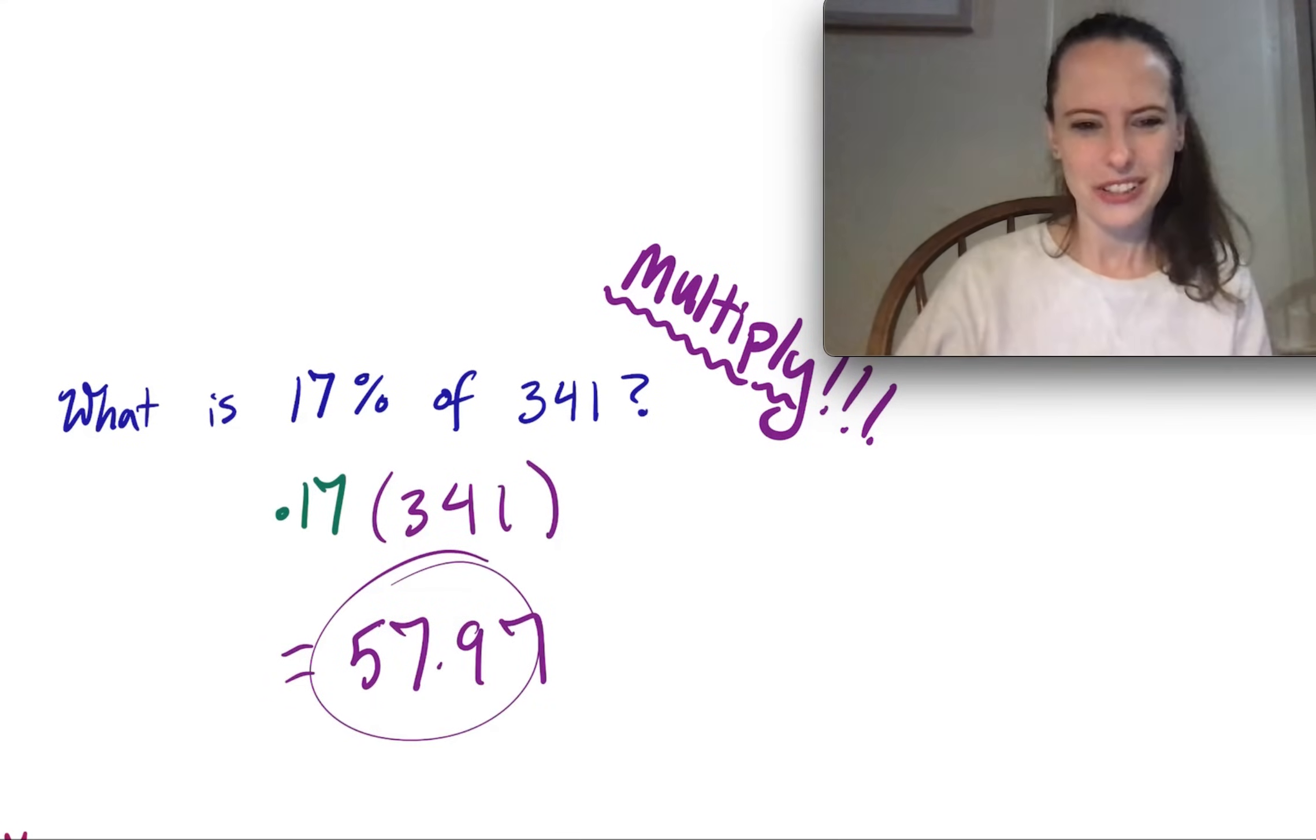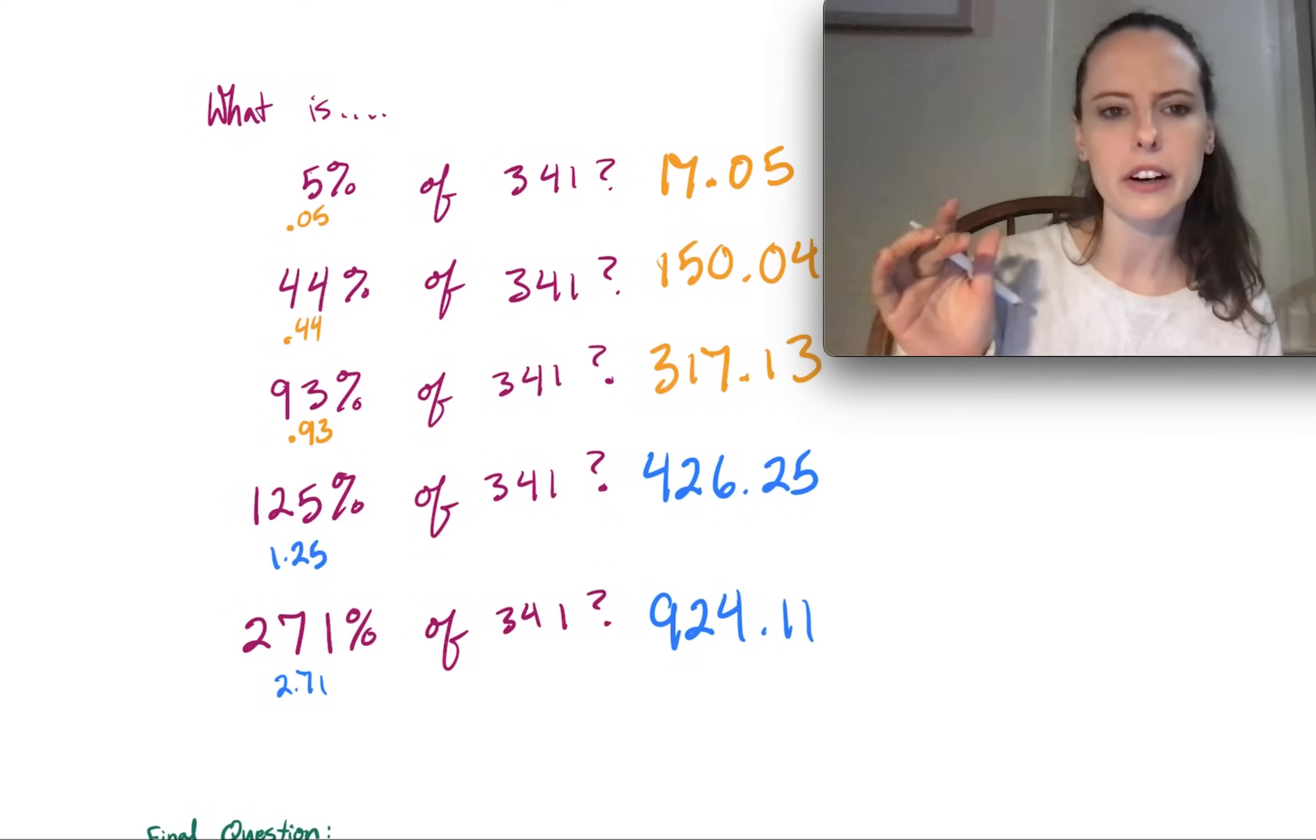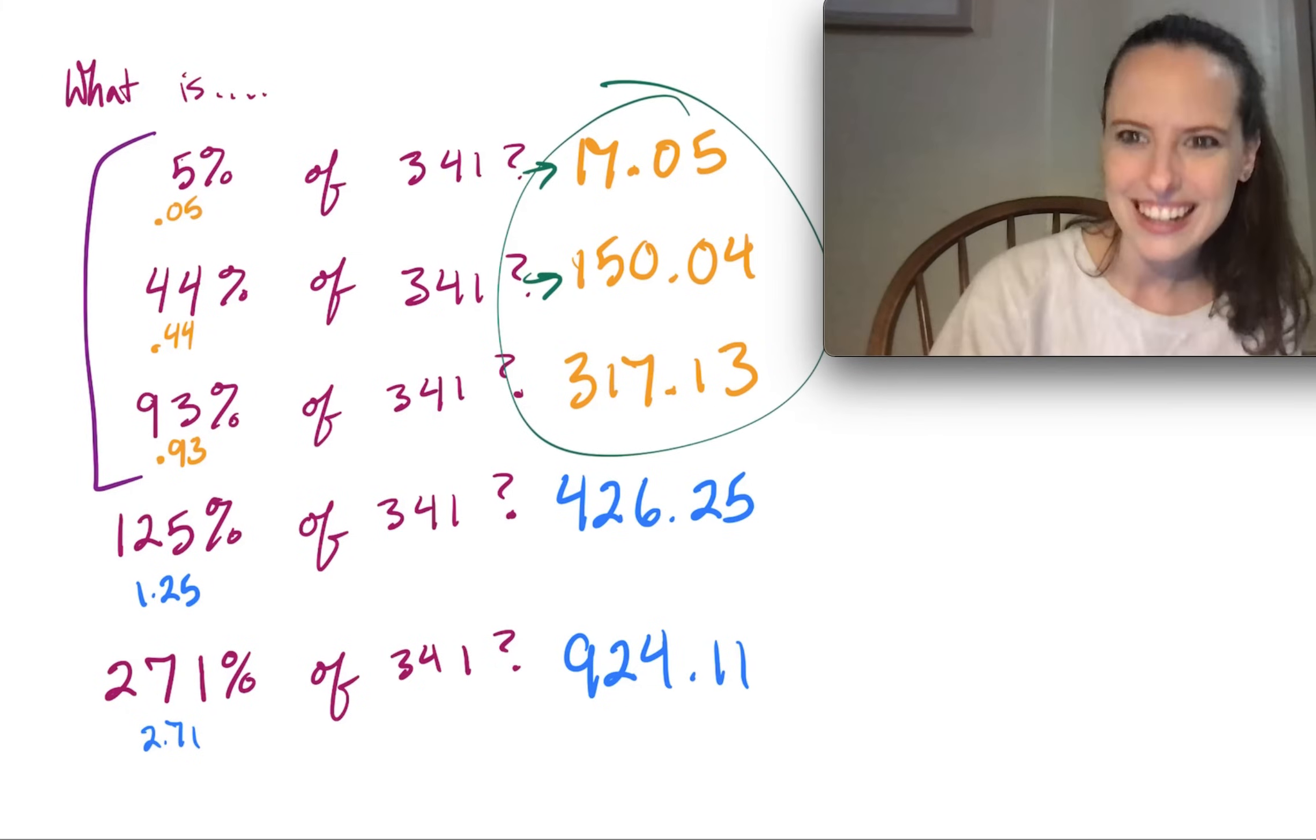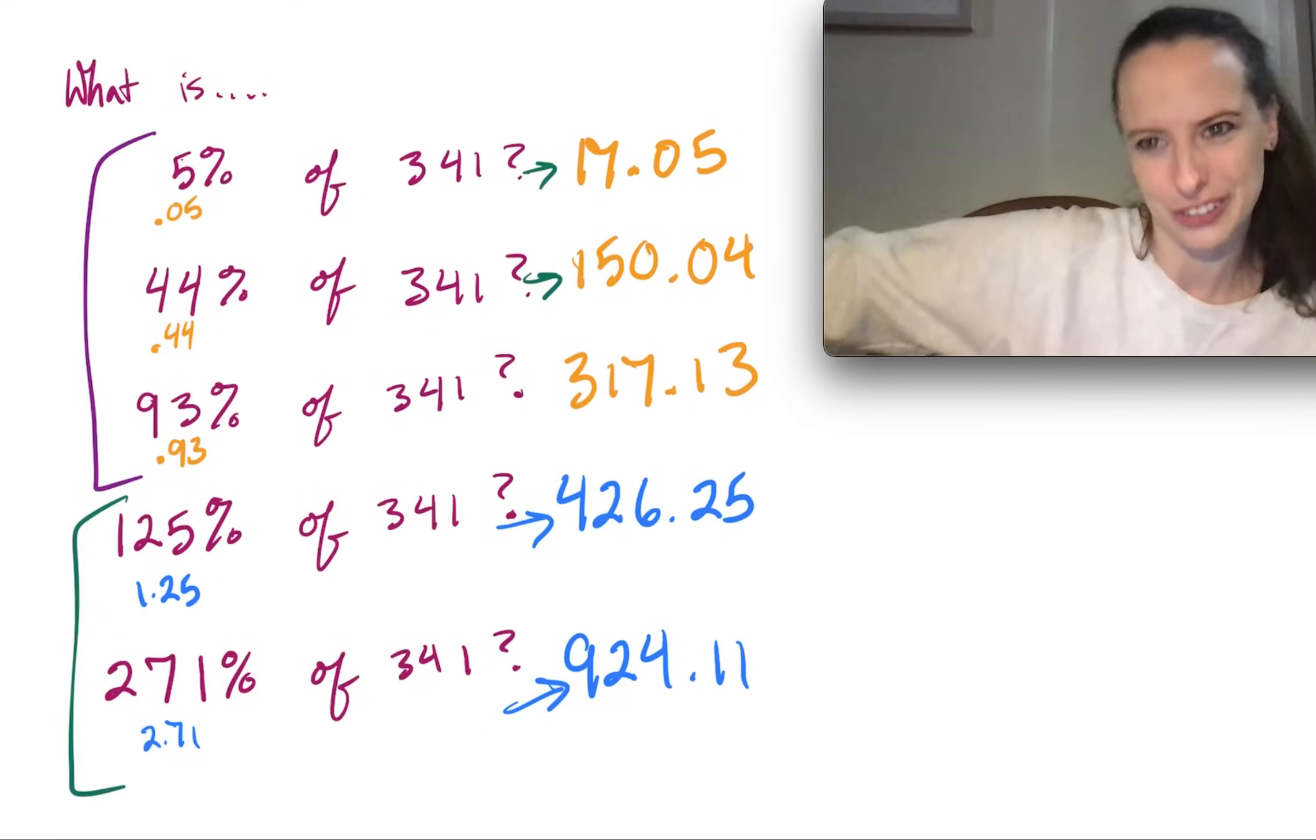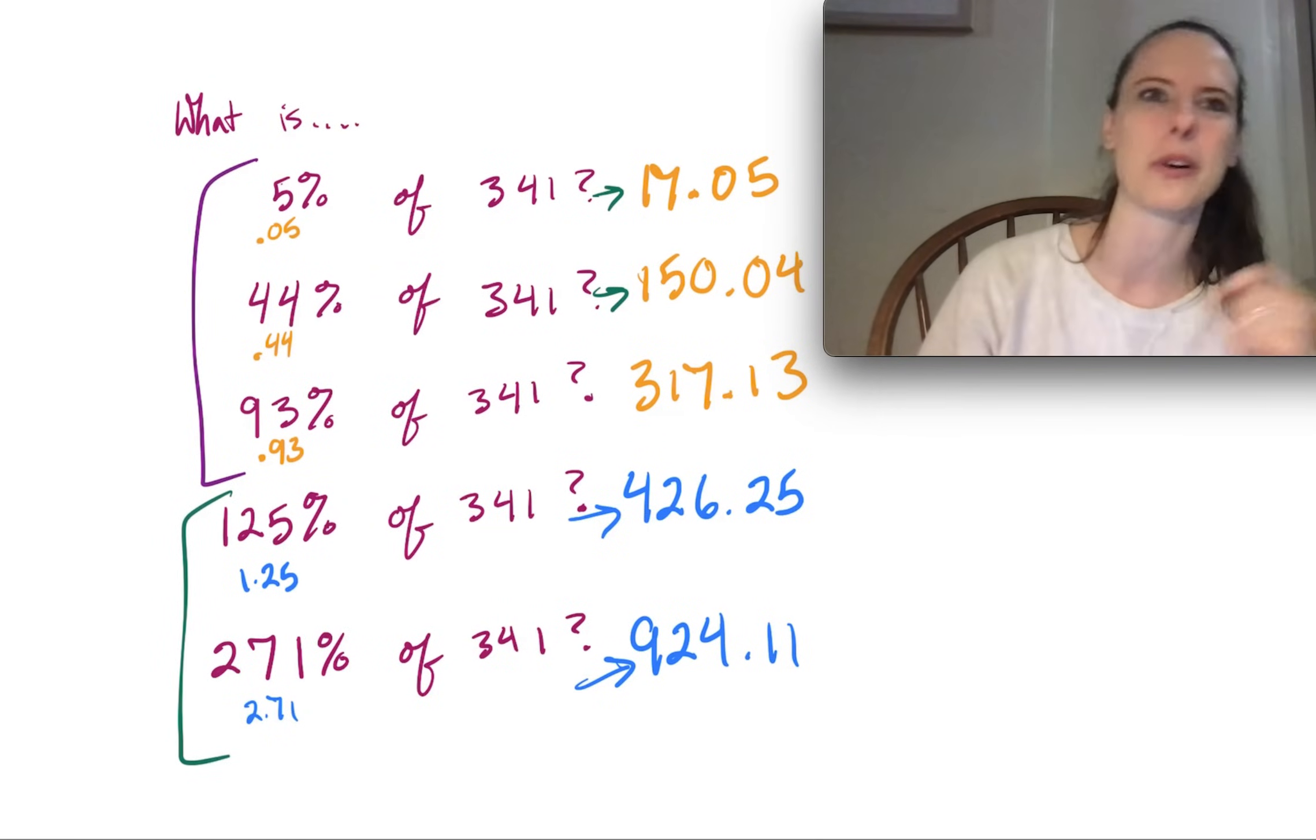That's it. So we've got several other examples of this. And I just want to point out one other thing here, where anytime our percent is less than 100, when we multiply that by this 341 in this case, it always makes it go down. So you see how all of these answers are less than 341. And that's because it's some portion of 341, not the full 100%. But then if our percent is higher than 100, that's when it causes this answer to be higher than 341. So it has that effect depending on whether your percent is less than 100 or more than 100.